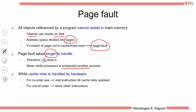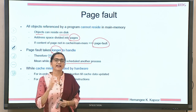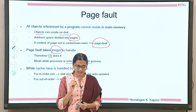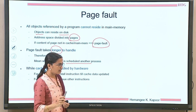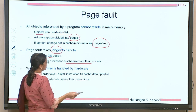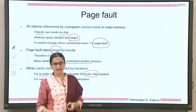Analogously, cache miss is the analogy of a page fault. But cache misses are handled in the hardware and page faults are handled in software. In case of cache miss, if we have an in-order processor, we can stall that particular instruction until the cache is updated. But if we have an out-of-order processor, other instructions or threads can be scheduled while the cache miss gets handled by the hardware.